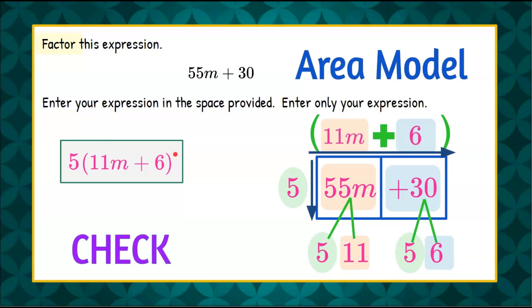Now we're going to check our work. We're going to check our work by using the distributive property. 5 times 11m is 55m. 5 times 6 is positive 30. 55m plus 30 is our given expression. So there you have it.